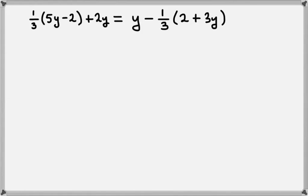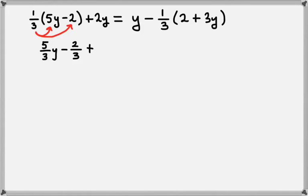The first thing we want to do is get rid of the parentheses. On the left we're going to distribute the 1 third. So first we'll take 1 third times 5y, that gives us 5 thirds y, and then 1 third times negative 2 gives us negative 2 thirds, and then we'll add the plus 2y.